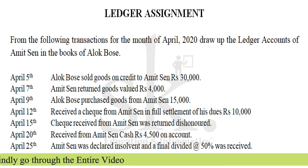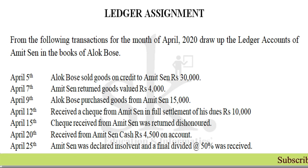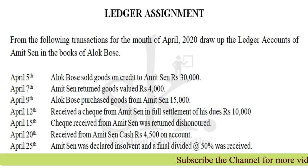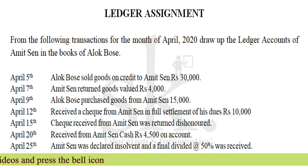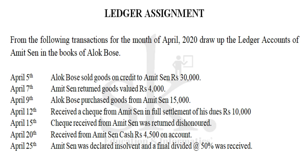On 5th April, Alok Bose sold goods on credit to Amit Sen for Rs 30,000. On 7th April, Amit Sen returned goods valued Rs 4,000. On 9th April, Alok Bose purchased goods from Amit Sen for Rs 15,000. On 12th April, received a check from Amit Sen in full settlement of his dues of Rs 10,000. On 15th April, the check received from Amit Sen was returned dishonored. On 20th April, received from Amit Sen cash Rs 4,500 on account. On 25th April, Amit Sen was declared insolvent and a final dividend at the rate of 50% was received.